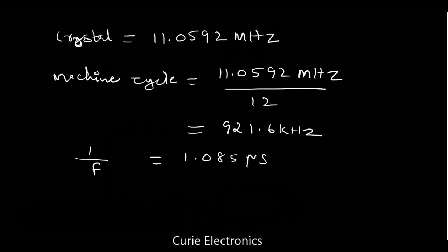For two machine cycles, we should hold the reset pin at high. The RST pin should be high for at least two machine cycles. That means we should have a pulse like this: it should go low to high to low pulse.